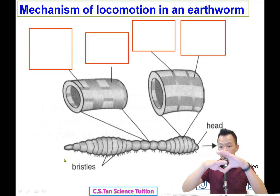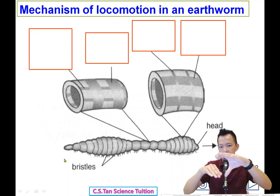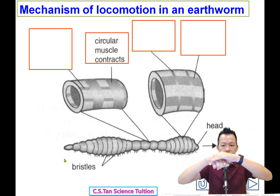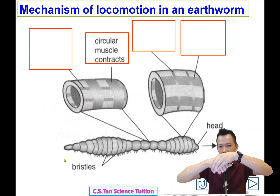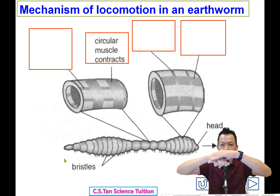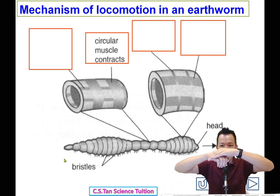The first step: the circular muscle contracts. At the same time, the longitudinal muscle — the second layer of muscle — relaxes. So circular muscle contracts, and longitudinal muscle relaxes.